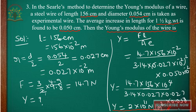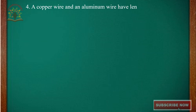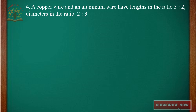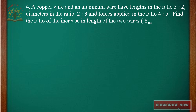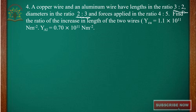Let us go to question number 4. A copper wire and an aluminum wire have lengths in the ratio 3:2, diameters in the ratio 2:3, and forces applied in the ratio 4:5. Find the ratio of increase in length. Young's Modulus of copper = 1.1 × 10¹¹ N/m² and Young's Modulus of aluminum = 0.70 × 10¹¹ N/m².